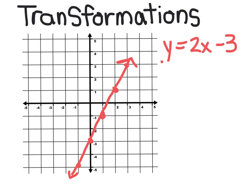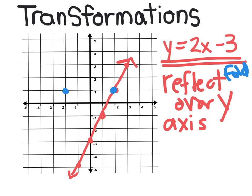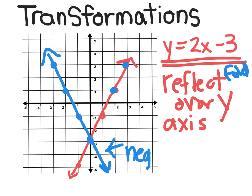To reflect the function y equals 2x minus 3 over the y-axis, think of reflecting as folding: the point at 2,1 goes to negative 2,1, and the point at 3,3 goes to negative 3,3. The new blue line has a negative slope but the same y-intercept, so its equation is y equals negative 2x minus 3.